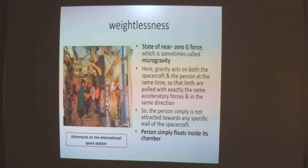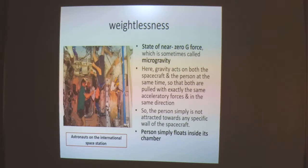An astronaut is in free fall when orbiting Earth. The reason an astronaut floats inside the spacecraft is that he or she is falling at the same speed as the spacecraft. This phenomenon of floating caused by free fall can also take place on Earth. For example, a person in an elevator that suddenly breaks free and falls from the 30th floor of a building would float inside the elevator, as they would be falling at the same speed as the elevator.